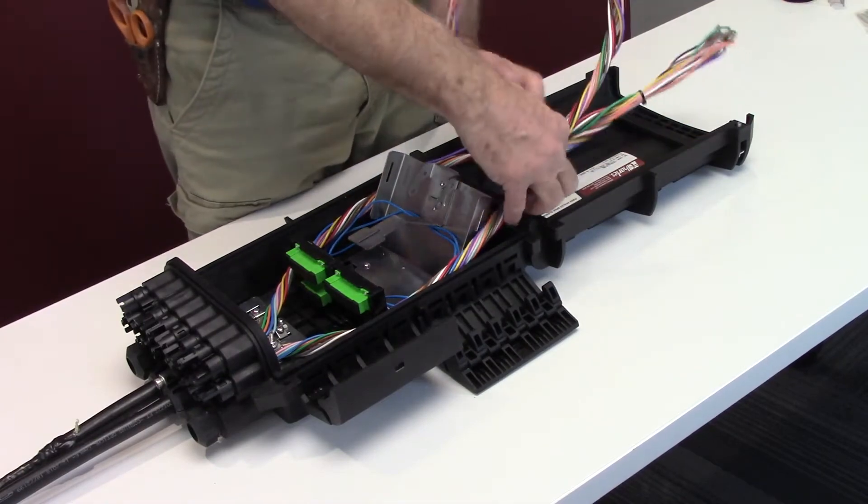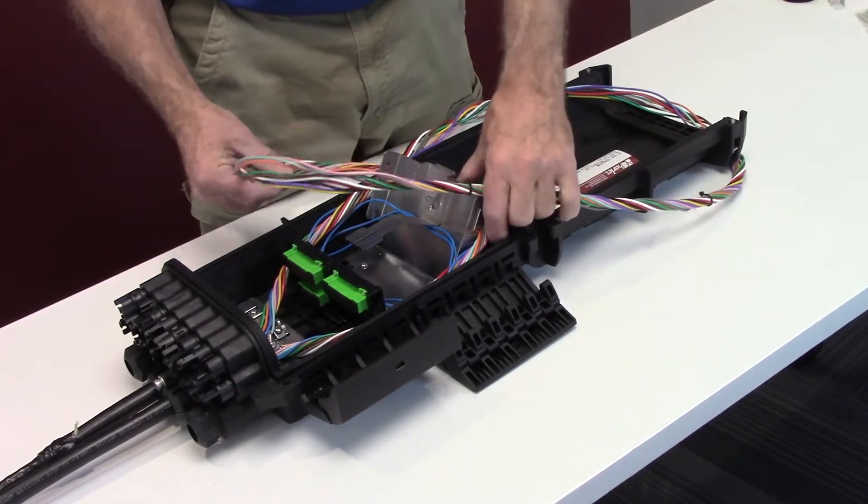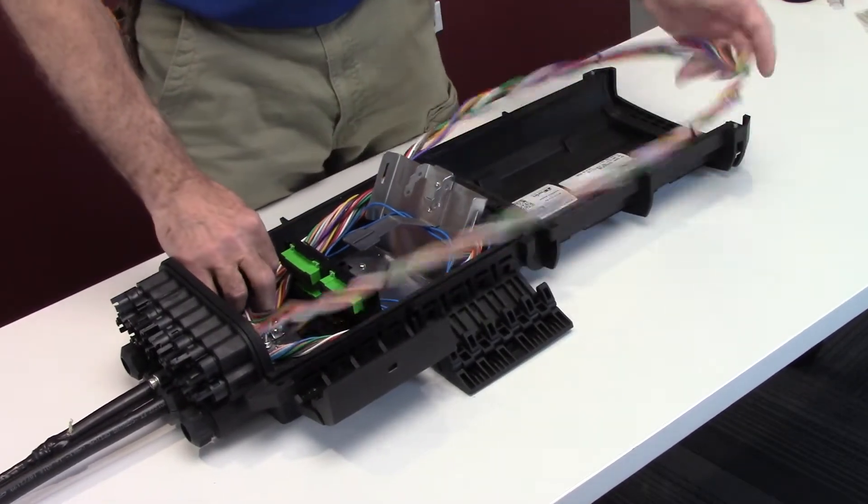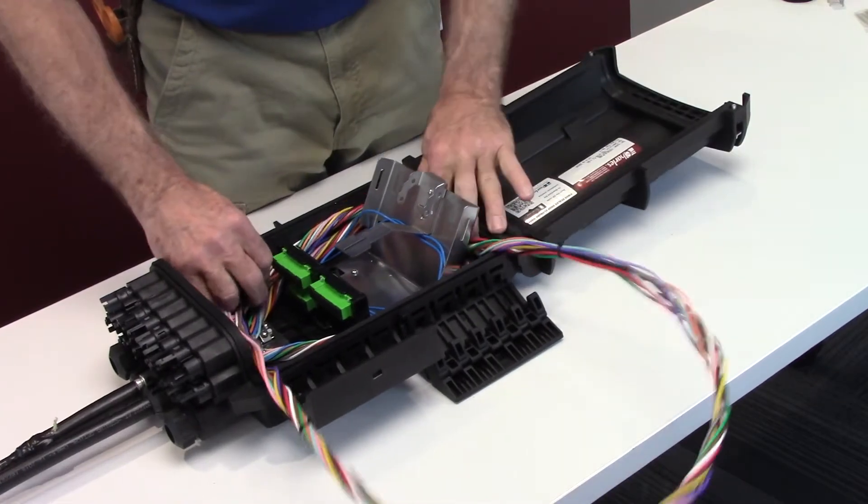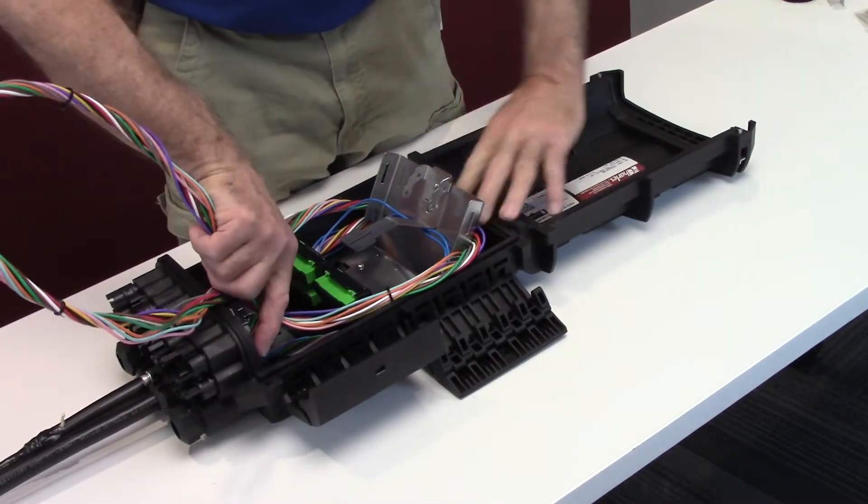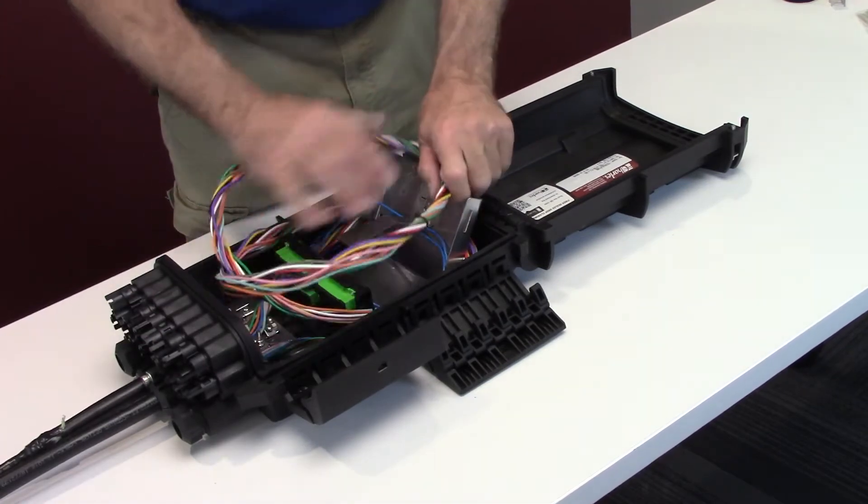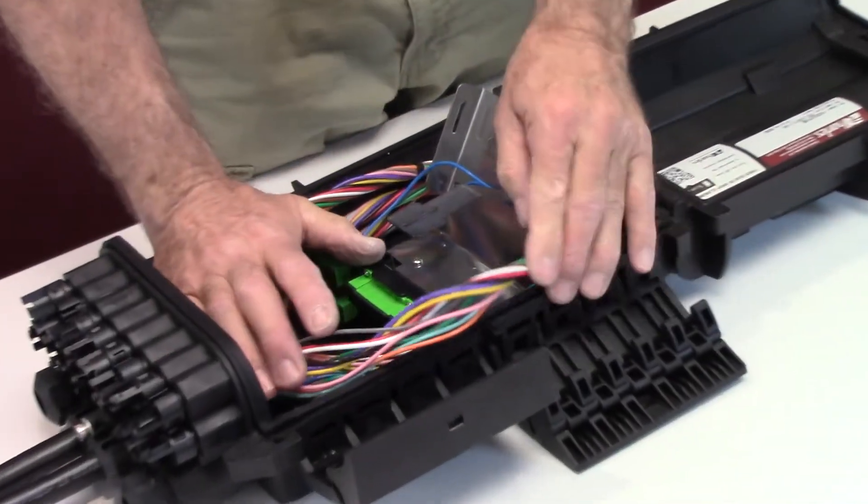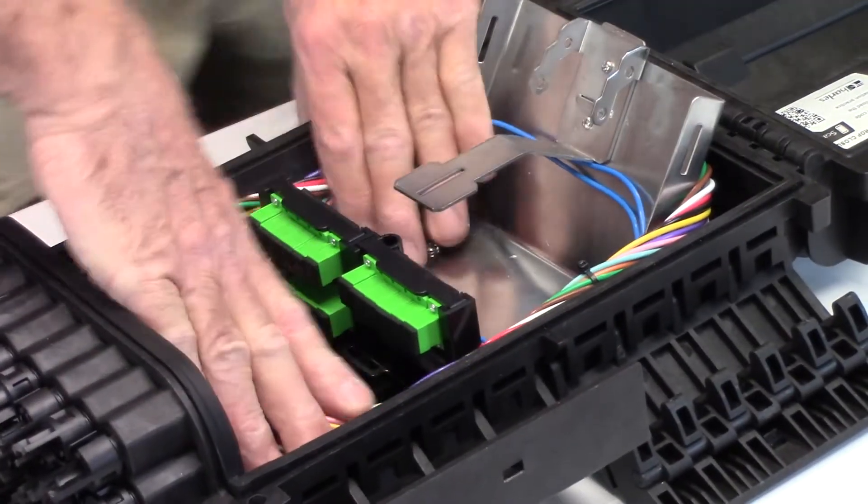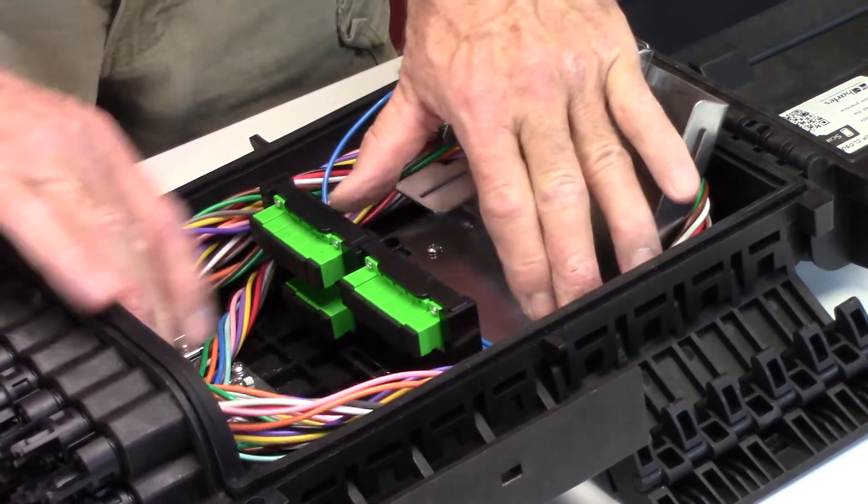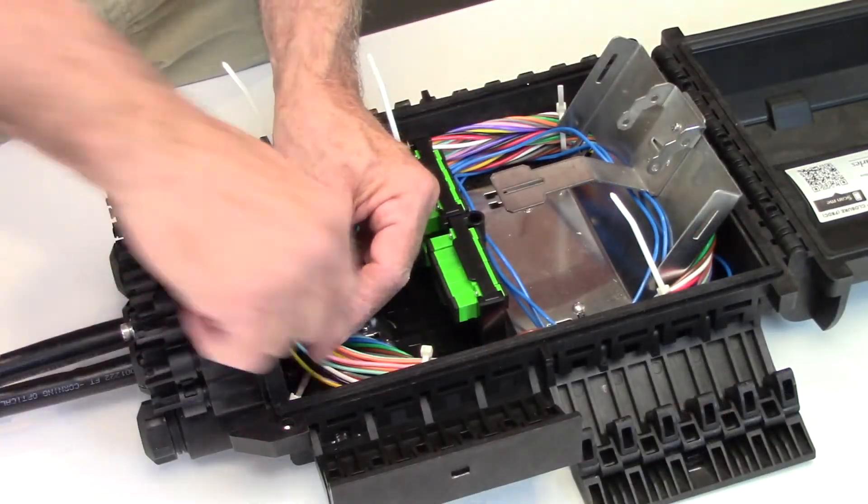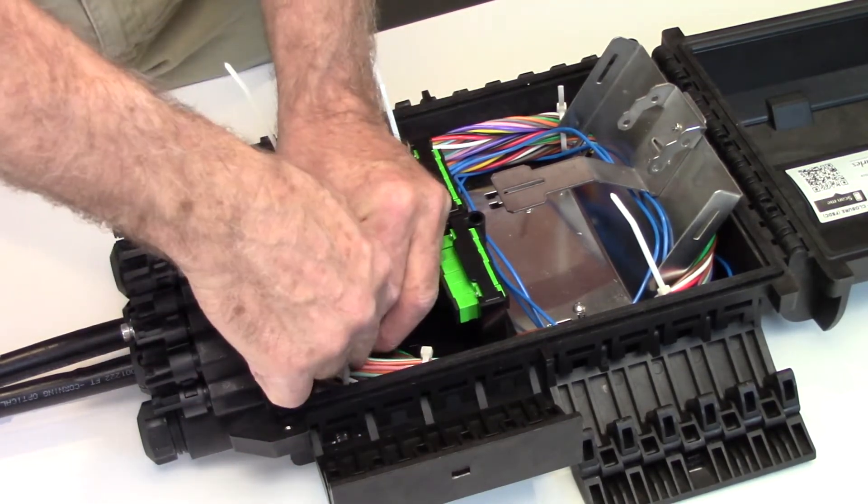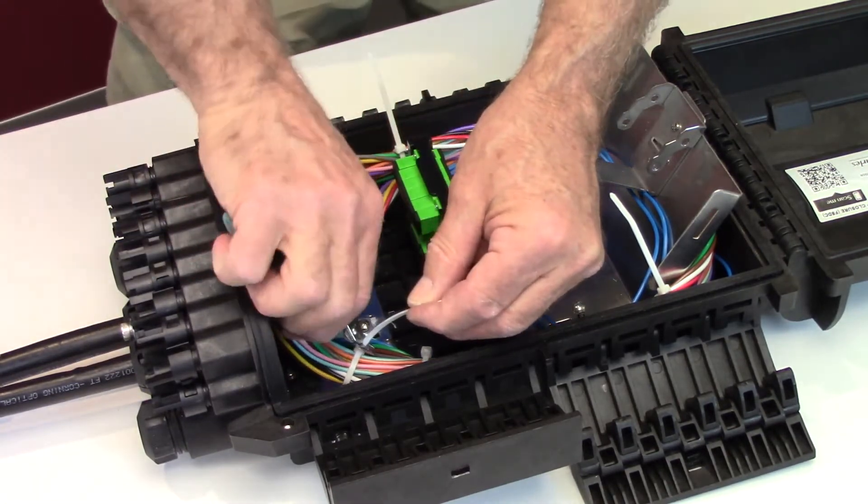Coil the express buffer tubes around the fiber storage basket, being careful that the tubes are not kinked. The 6 1⁄2 to 7 foot express length of the tubes will fit around the basket. Use cable ties to secure the expressed buffer tube coil around the fiber basket. The fiber coil should be stored below the edges of the FSDC.